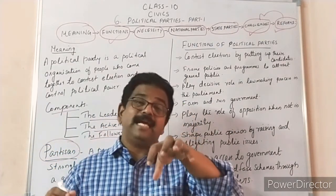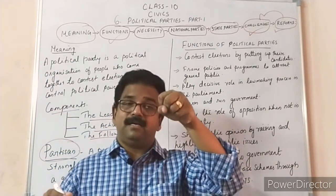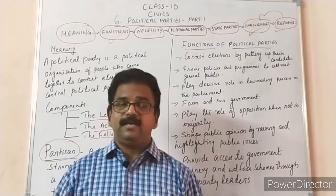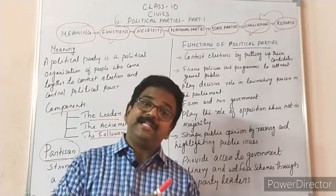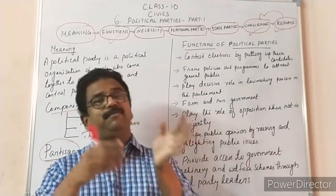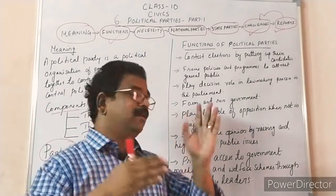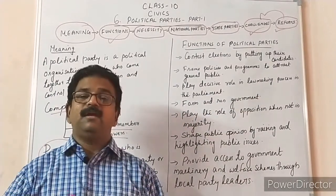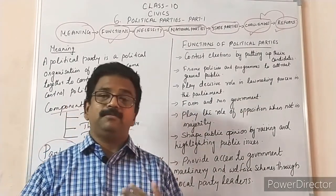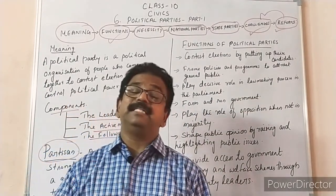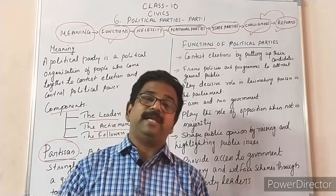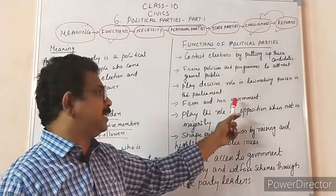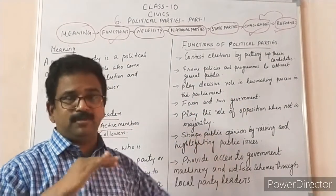The fourth function is that political parties form and run the government. Parties select leaders, train them, and make them ministers. If they win the election, they have to form the government and run it.